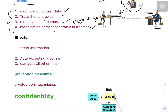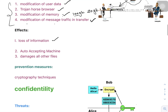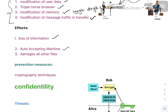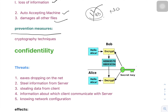The effects of these threats are loss of information — whatever Andy was sending, the message is lost. Another effect is auto-accepting machines, where the internet opens unwanted sites without permission; the system automatically accepts and browses those sites, causing damage to the system and files.